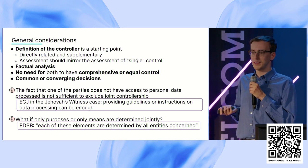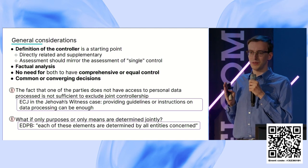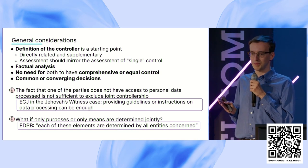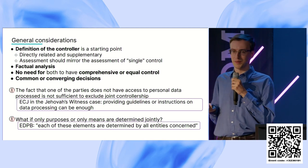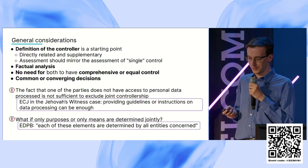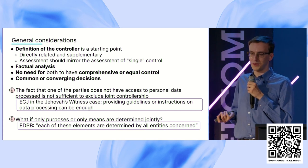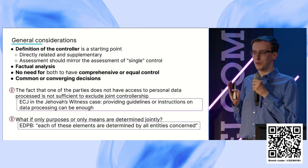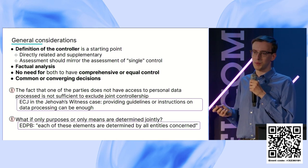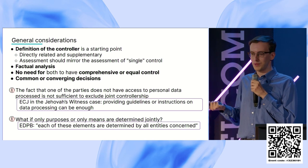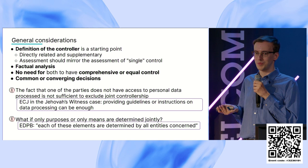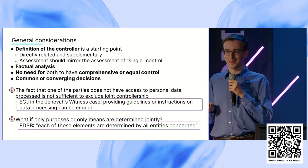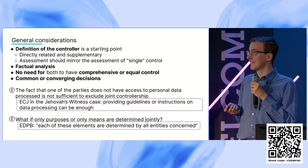There is no need for comprehensive or equal control. Both parties don't need to specifically define who is responsible for each part — even just slight interaction between different parties can already cause a joint controllership to an extent. Common or converging decisions are even more interesting, because that means it is not necessarily a deliberate decision to agree on a joint purpose. Different purposes can converge in a certain situation, sometimes unexpectedly, and we'll go into some case law a little further.